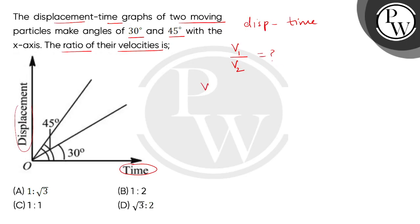Let's assume that V1 is the velocity of first moving particle. We will represent this as displacement divided by time, which will represent this graph from slope number 1.